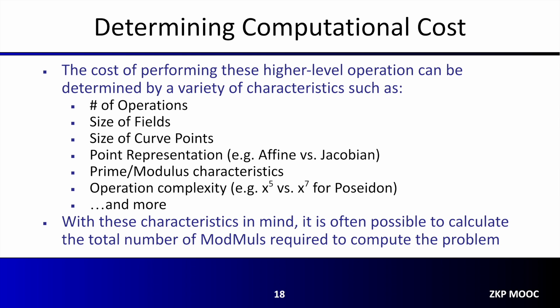The first step to improving proof generation performance is to understand the computational, memory, and bandwidth costs of the proof system and use case. By breaking down higher-level operations like MSM and NTT into the number of modular multiplications needed to compute them, it is often possible to estimate the performance across a wide variety of hardware platforms prior to completing an implementation. In order to ensure that the estimate is accurate, there are a number of parameters that should be known in advance. The first most important parameter is the number of each operation in the proof system — for instance, some proof systems may require four or more MSMs per proof while others may only require two.